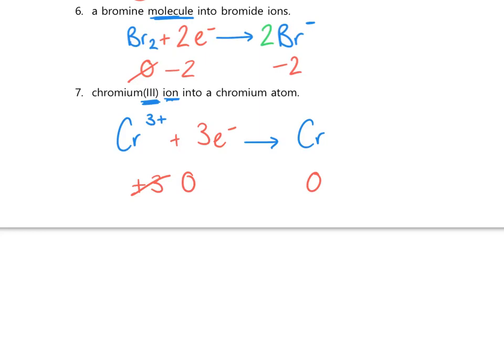So just remember your steps: write your reactants and products; check that it's balanced in terms of atoms; pick which side to add your electrons to — it's the side that needs to go down in charge; then think about how many electrons you need to add.